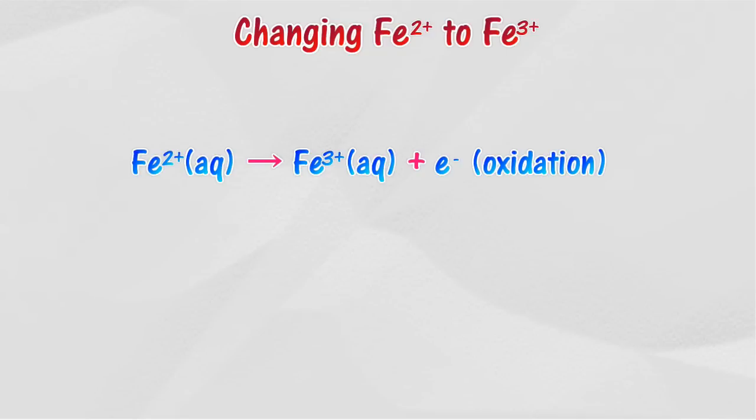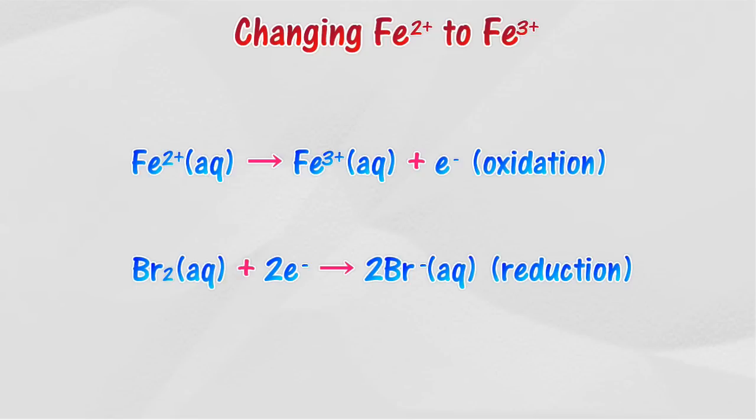Oxidizing agents can be used to change Fe2+ ions to Fe3+ ions. In this reaction, bromine water oxidizes Fe2+ ion to Fe3+ ion. At the same time, Fe2+ reduces bromine to bromide ion.